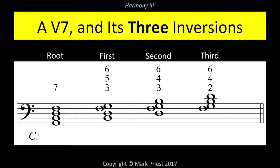Since any of the four tones of the dominant 7th chord may occupy the bass position, reason dictates that the V7 must have not only a first and second inversion, but also a third inversion, for a total of four positions. Complete figures of the thorough bass are as follows: 7-6-5-3; 6-4-3; and 6-4-2.